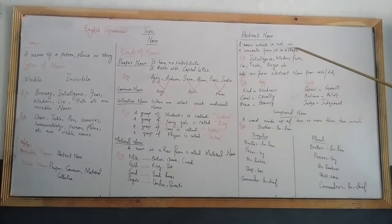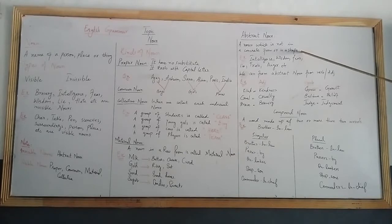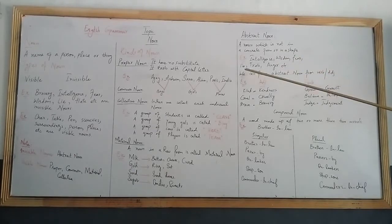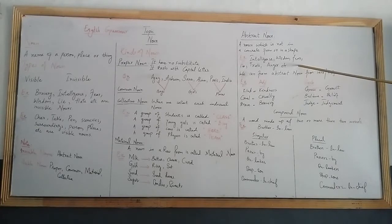A noun which is not in a concrete form or shape is called abstract noun. For example: intelligence, wisdom, fear, love, life, truth, anger. These are all our feelings which depend on reactions or actions. These feelings are not visible or tangible. Abstract nouns cannot be seen or touched.